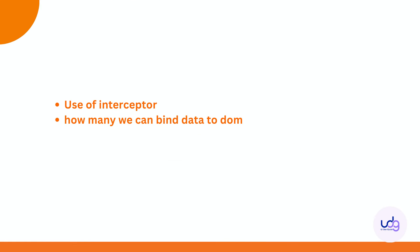How many ways can we bind data to the DOM? We have property binding, event binding, interpolation, and two-way binding — which is a mixture of property binding and event binding.